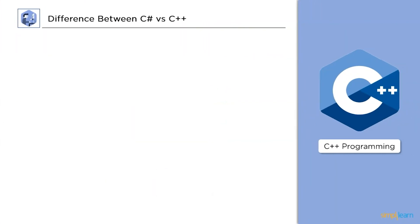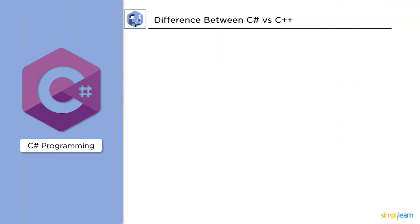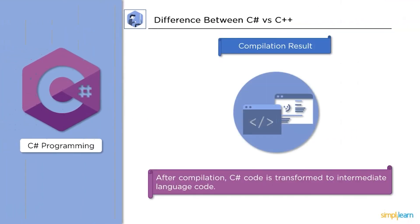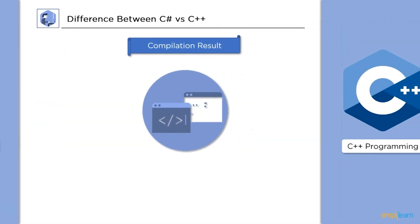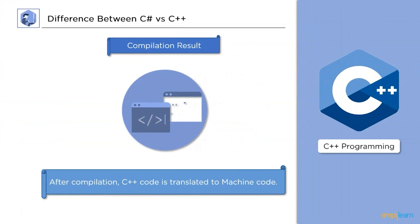Next up, compilation result. After compilation, a C Sharp code is translated into an intermediate language code using JIT in ASP.NET. As for C++, after compilation, it is converted to machine code using a C++ compiler.